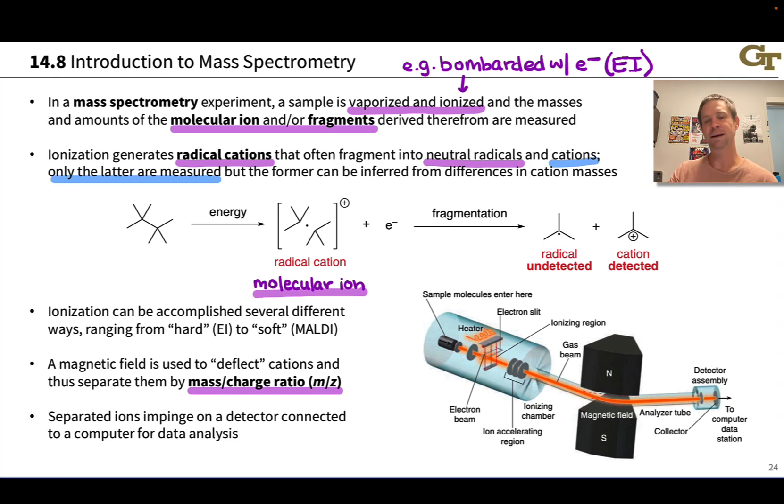After this bending by the magnetic field, the ions impinge on a detector, and that detector puts everything together and generates a mass spectrum which is the output of this experiment.